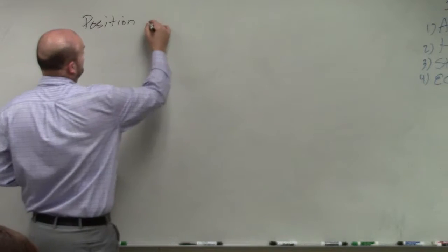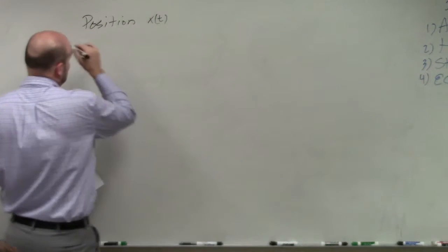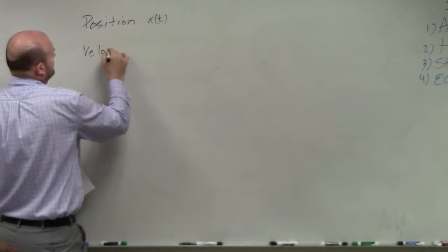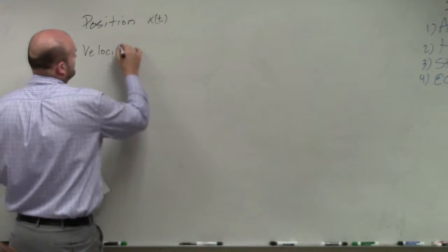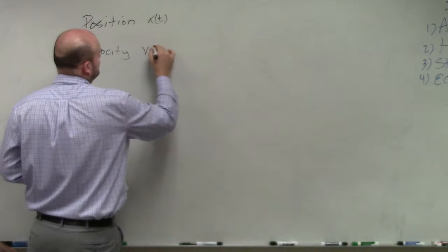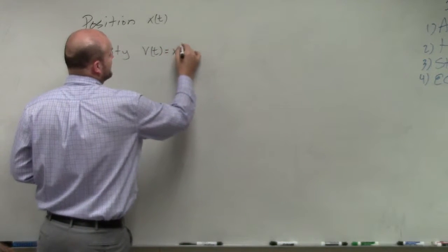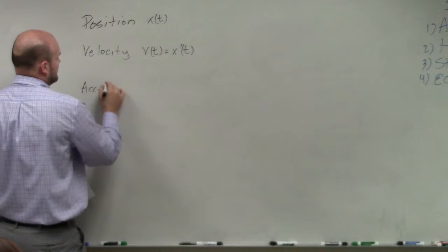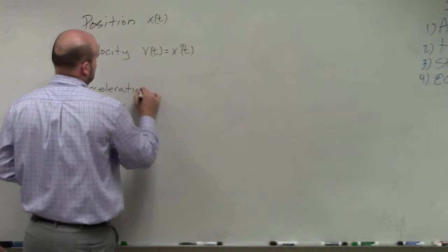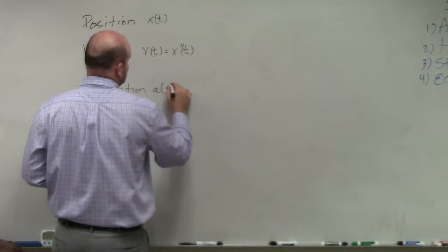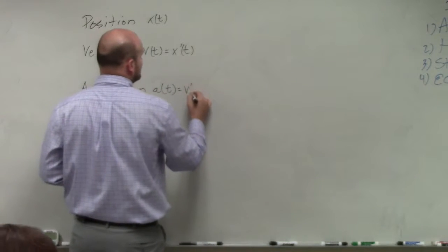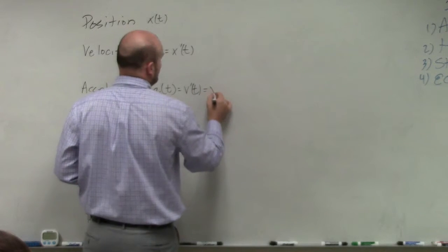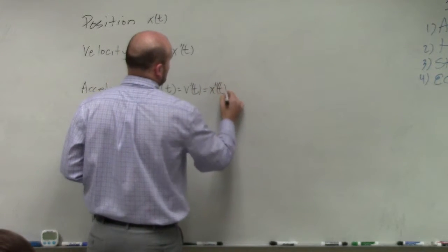Remember our position, x of t, velocity, v of t, or that's the same thing as x prime of t. And then the last one is acceleration. And we'll use a of t, or that's also v prime of t, or x double prime of t.